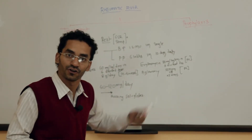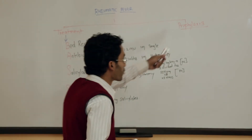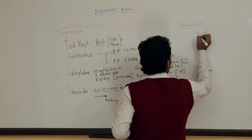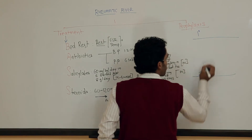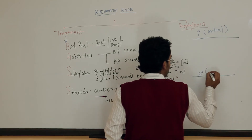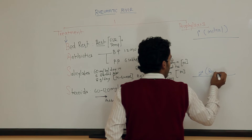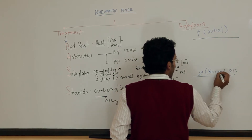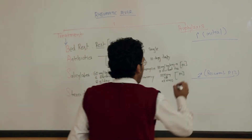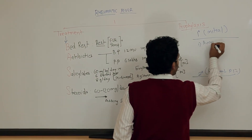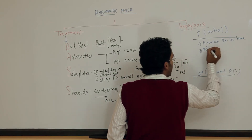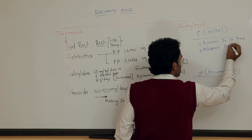This was the treatment of rheumatic fever. Now we are going to talk about the prophylaxis in case of rheumatic fever. There are primary prophylaxis and secondary prophylaxis. Primary prophylaxis is for initial rheumatic fever, and secondary prophylaxis is for recurrent rheumatic fever. In primary prophylaxis, always remember there should be accurate diagnosis in time and adequate antibiotic doses.